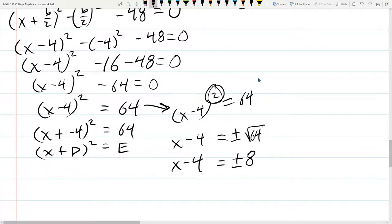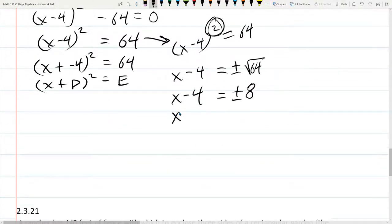Square root 64 is 8. There are two solutions in here. We'll sort them at the end. I need to add 4 to both sides.